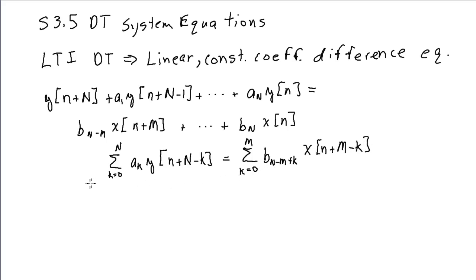Causality requires that capital M is less than capital N, so the maximum advance on the output side has to be greater than the maximum advance on the input terms. We'll generally assume that M equals N, and then we can handle M less than N cases by just letting some of the B coefficients be 0.